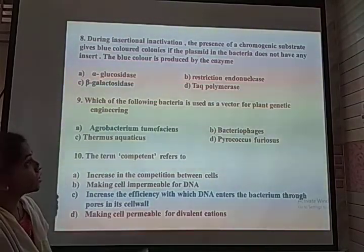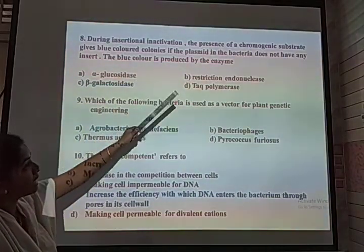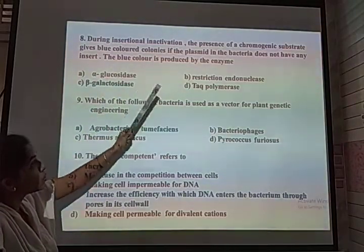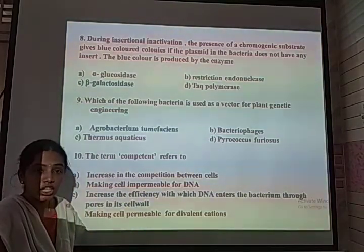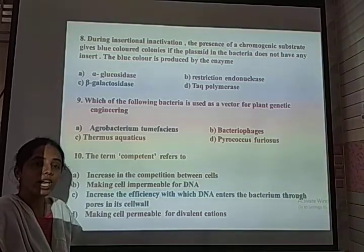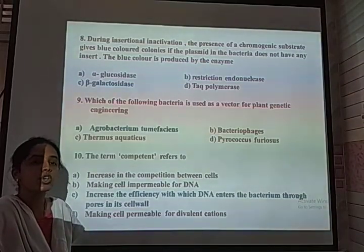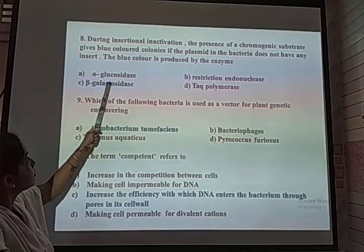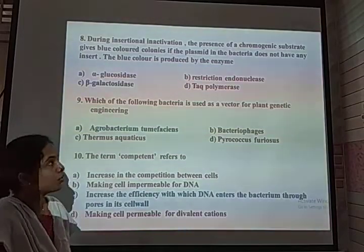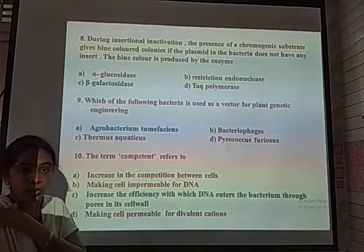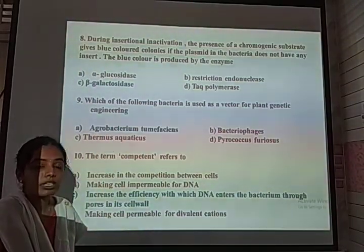During insertional inactivation, the presence of a chromogenic substrate gives a blue color. If the plasmid in the bacteria does not have any insert, the blue color is produced by the enzyme. We utilize another enzyme called beta-galactosidase to distinguish plasmids which are inserted and which are not. The correct option is beta-galactosidase — it is helpful for distinguishing the chromogenic substance present in transformants and non-transformants.